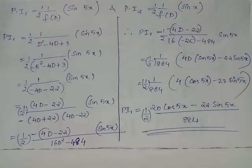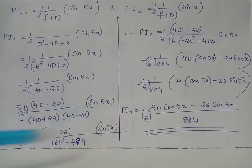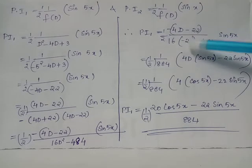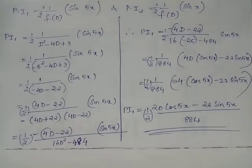The denominator is now 16D² - 484. Replacing D² again by -25, we get 16(-25) - 484 = -400 - 484 = -884. Negative over negative gives positive 884. In the numerator, the derivative of sin5x is 5cos5x, so 4D·sin5x = 20cos5x. Thus PI1 = (1/2)·(20cos5x - 22sin5x) / 884.